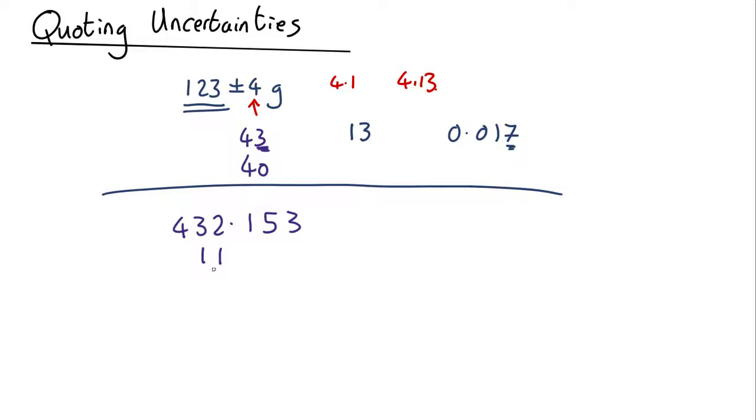Because the first digit is 1, I've quoted 2 significant figures. Now look at where the uncertainty is. In this case it's in the tens place, and any digits after that should not be quoted. So this should be quoted as 430 ± 11.